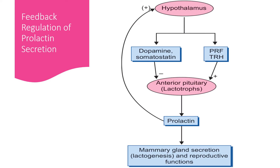Feedback regulation of prolactin secretion: the prolactin releasing factor (PRF) secreted from the hypothalamus stimulates prolactin release. Dopamine, a prolactin inhibiting factor, and somatostatin are also secreted from the hypothalamus and inhibit prolactin secretion. Prolactin itself stimulates the secretion of dopamine and somatostatin, which in turn inhibit prolactin secretion. Thus, prolactin controls its own secretion by a feedback mechanism.